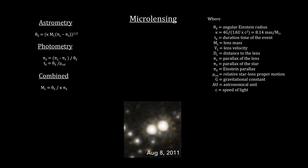This long lensing event duration, combined with the lens dynamics associated with the amount of background star brightening, combined with the Hubble measurements on the amount of deflection of the background star's image, provided the data to calculate the distance, velocity, and mass of the microlens.